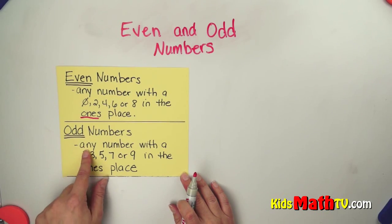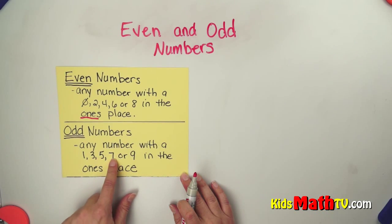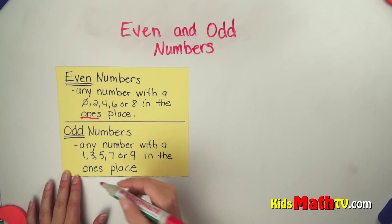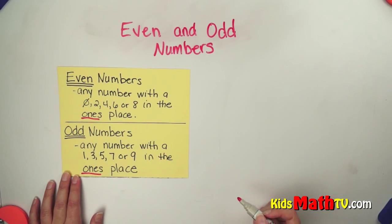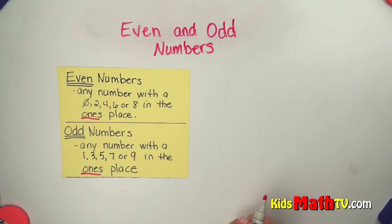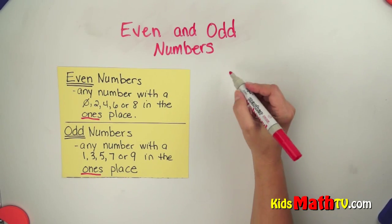Odd numbers are any number with a 1, 3, 5, 7, or a 9 in the ones place. So all we have to do to figure out if a number is odd or even is to look at the ones place.